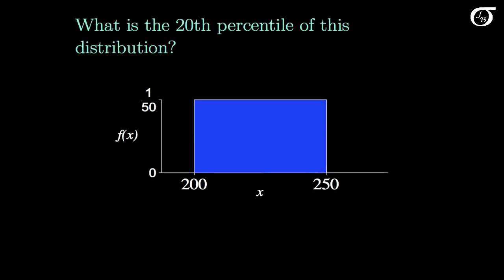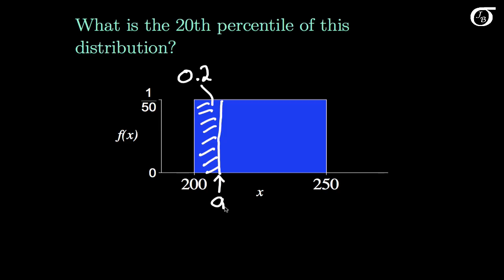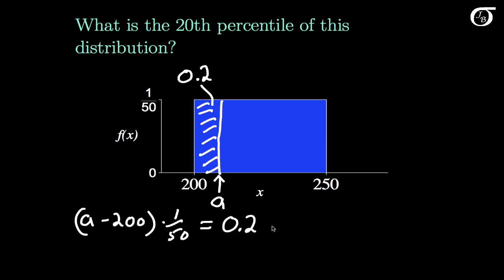What is the 20th percentile of this distribution? The 20th percentile is the value such that the area to the left is 0.2. Calling that value a, the rectangle has area equal to a minus 200 times 1 over 50, which must equal 0.2. Multiplying by 50 and adding 200, we get a equals 210. So the 20th percentile is 210.